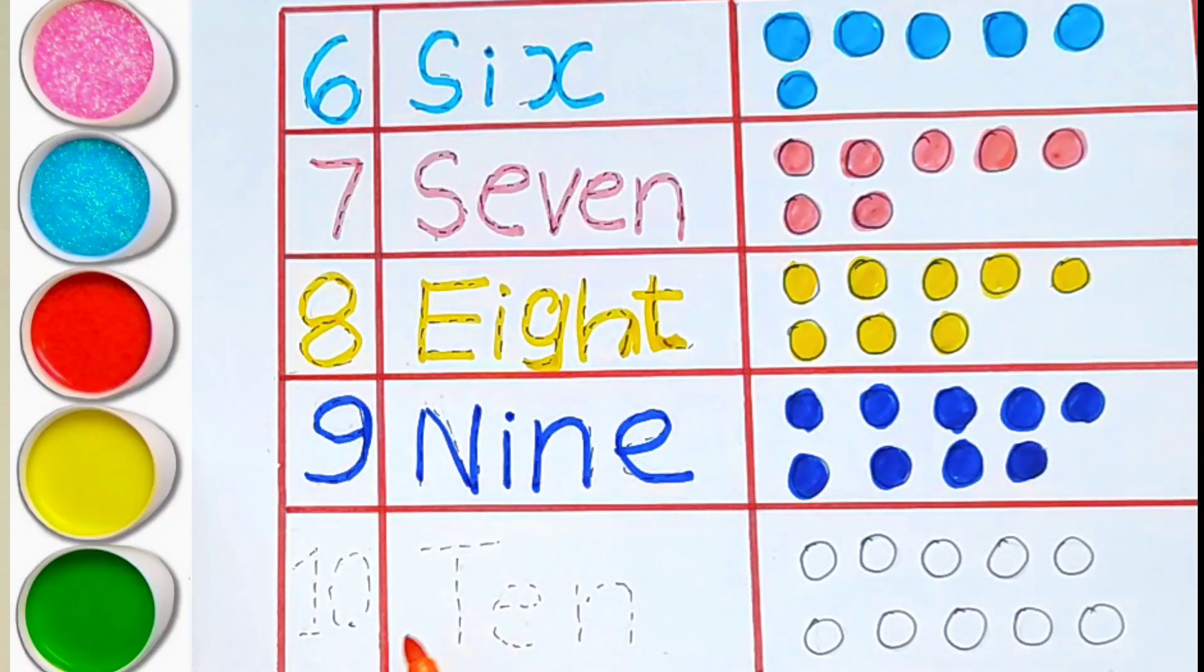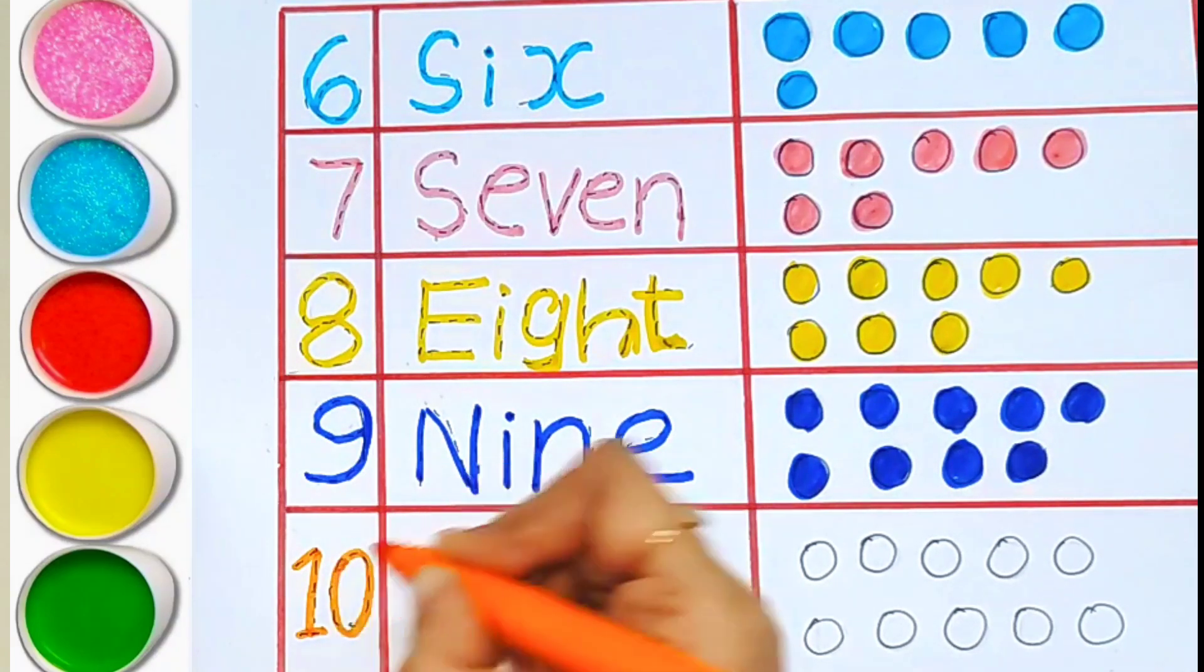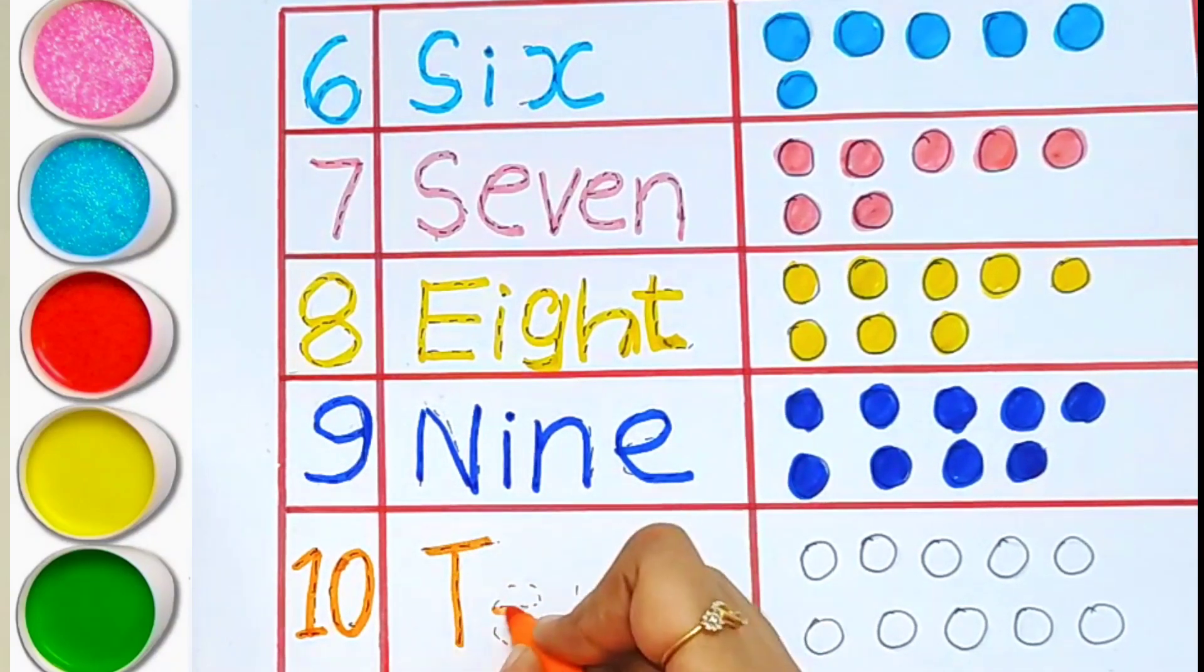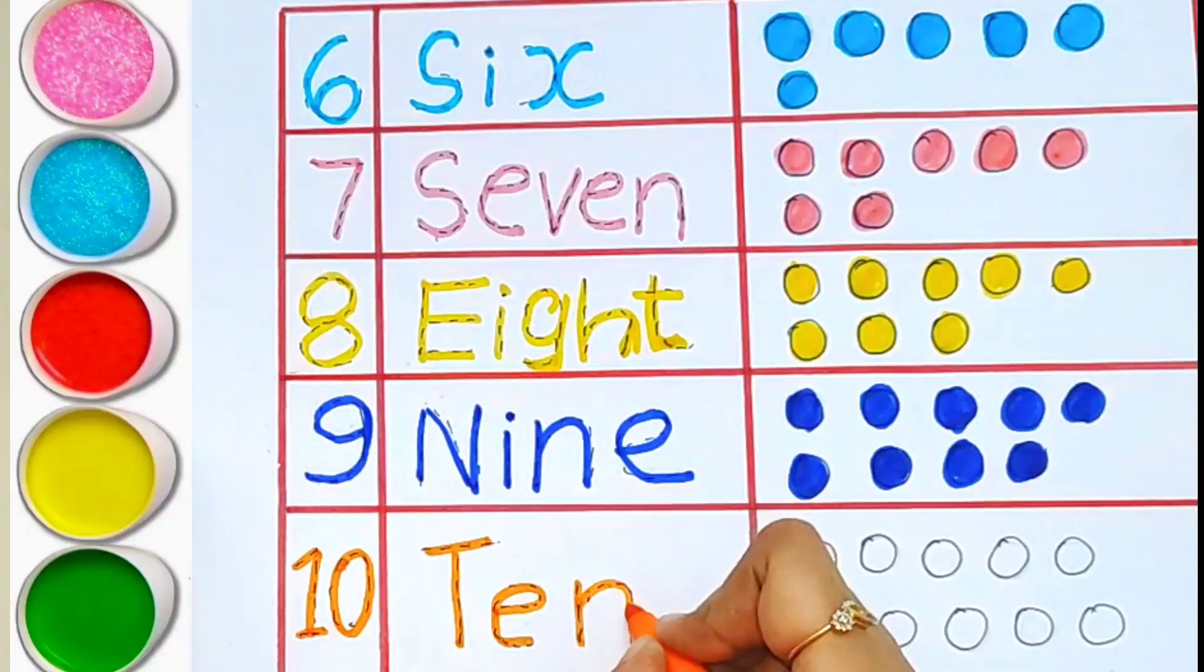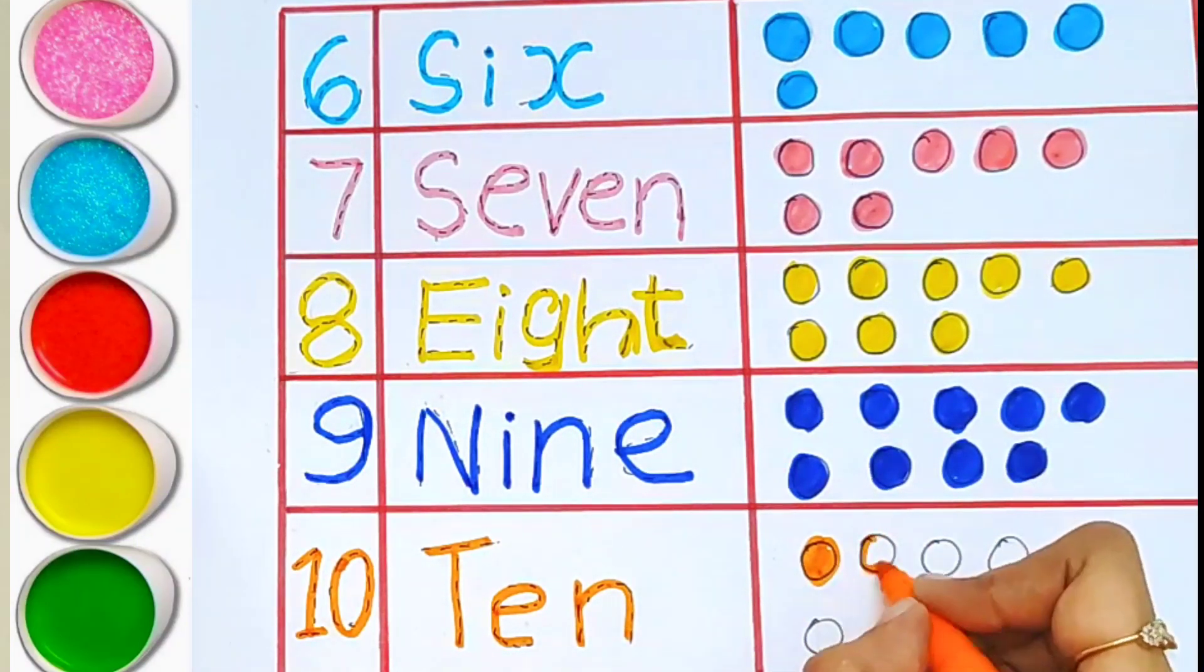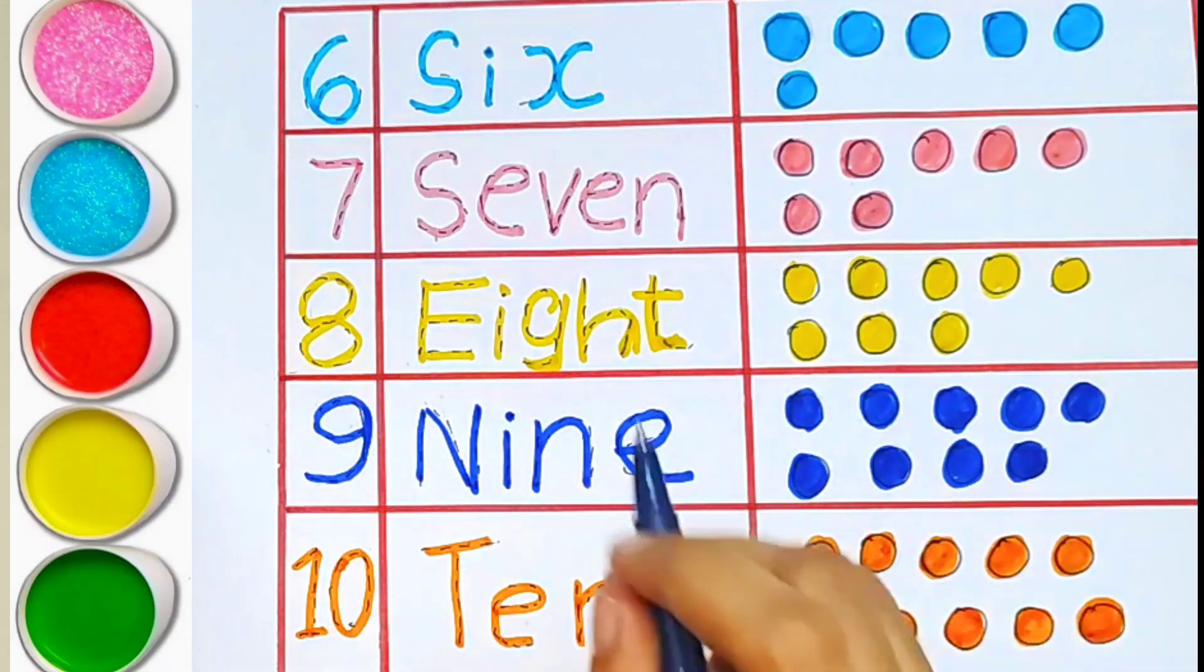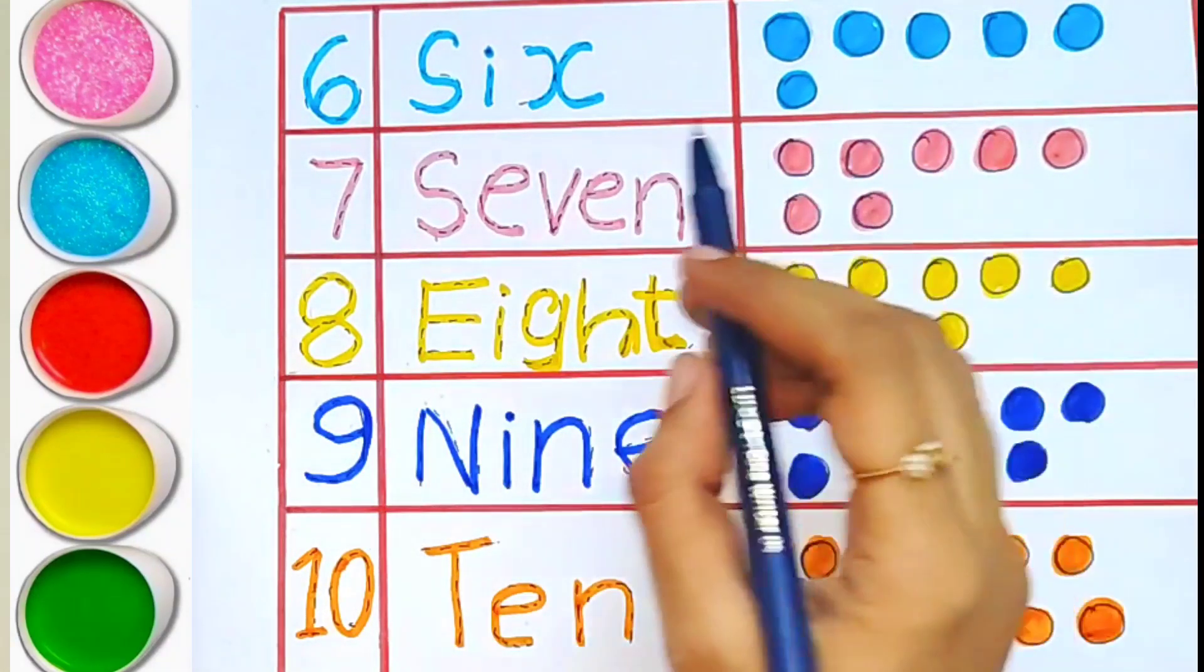Number ten. T-E-N. Ten. One, two, three, four, five, six, seven, eight, nine, ten. Ten balls. In this video we have learned the number names.